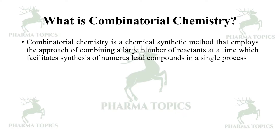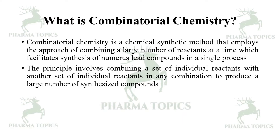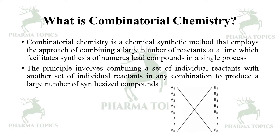What is combinatorial chemistry? Combinatorial chemistry is a chemical synthetic method that implies the approach of combining a large number of reactants at a time, which facilitates synthesis of numerous lead compounds in a single process. The principle involves combining a set of individual reactants with another set in any combination to produce a large number of synthesized compounds.